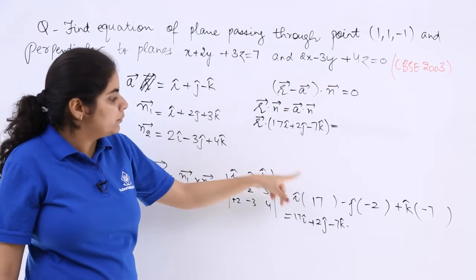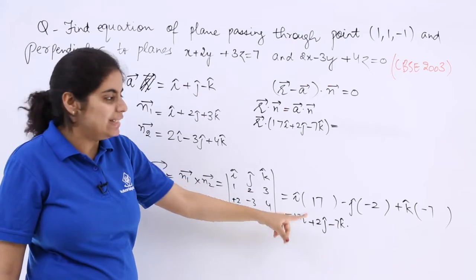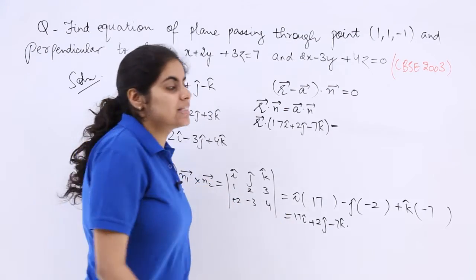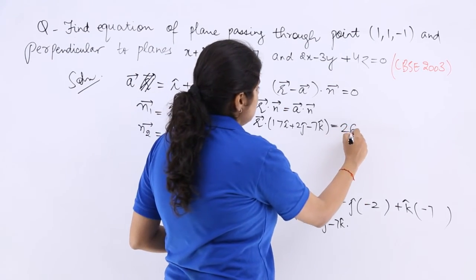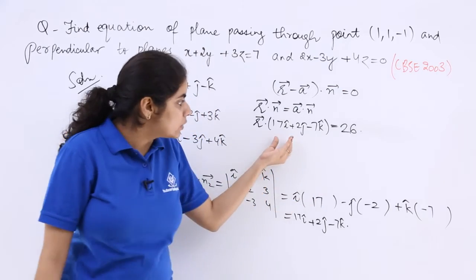So just dot product: 17 plus 2 is 19, 19 plus 7 is 26. So this is 26 here. This is the answer.